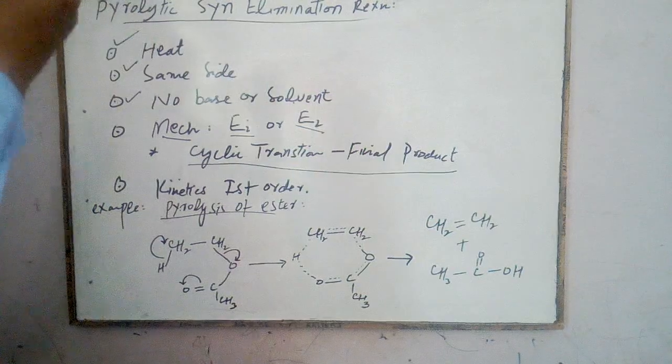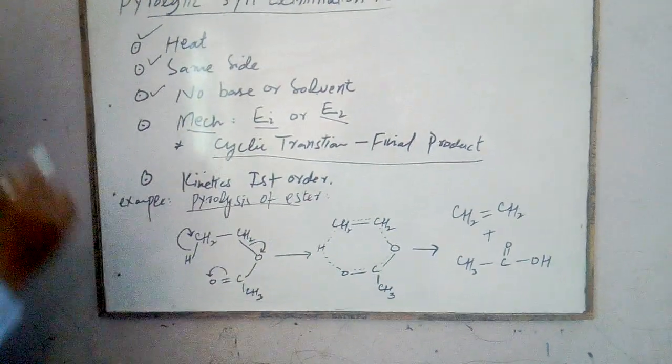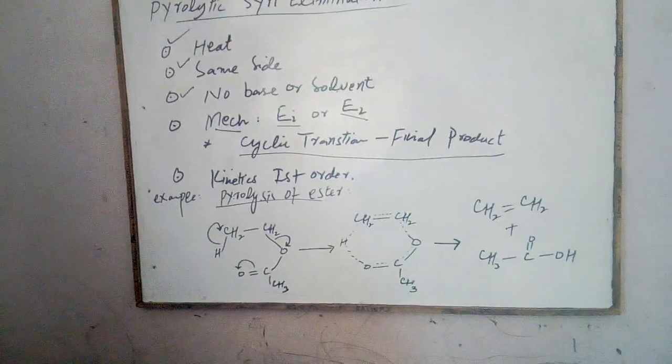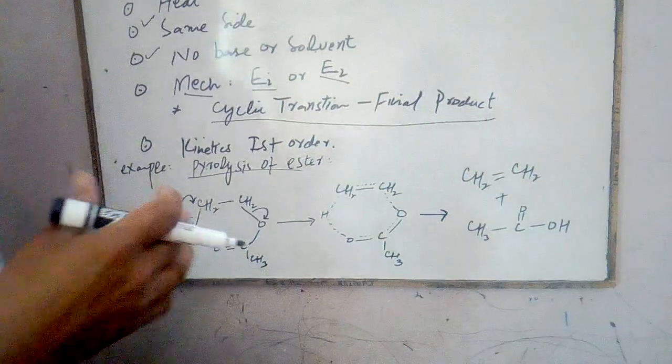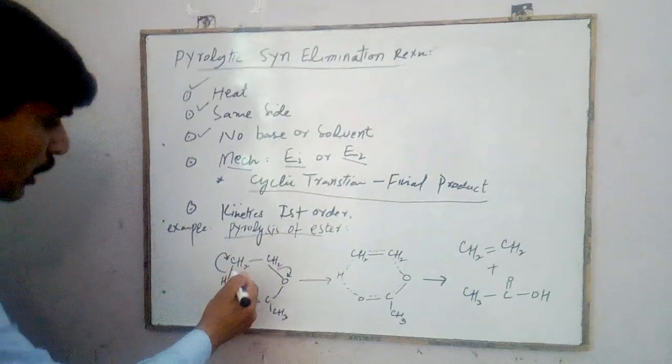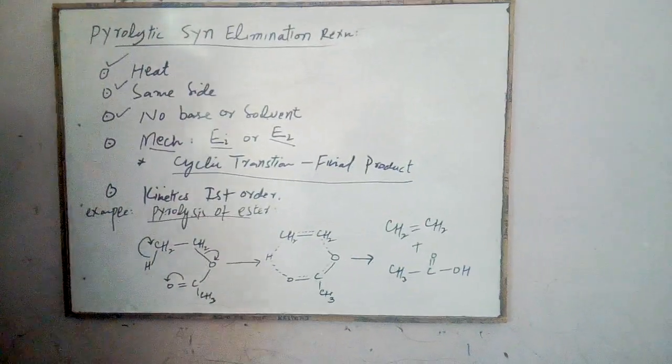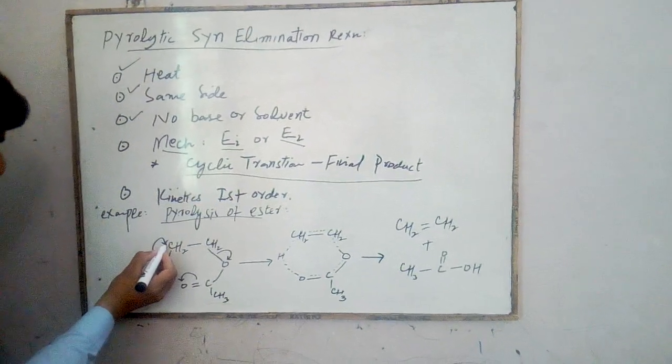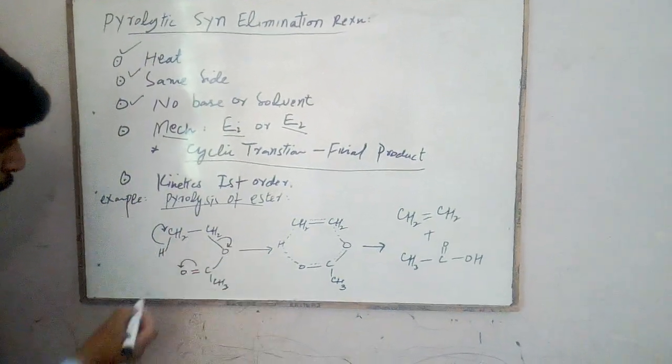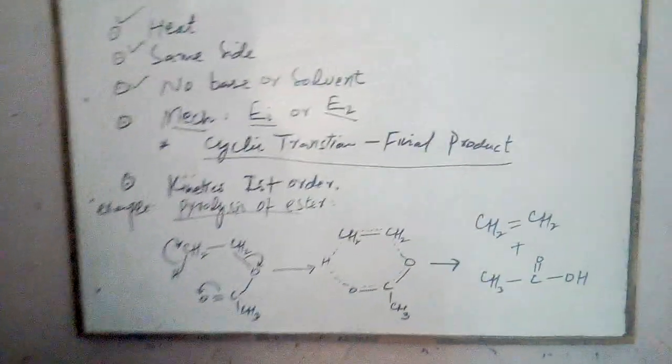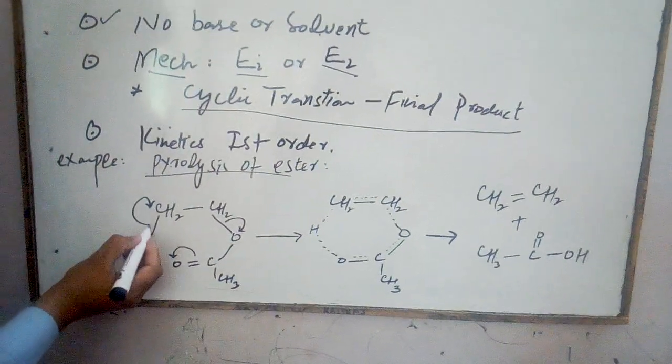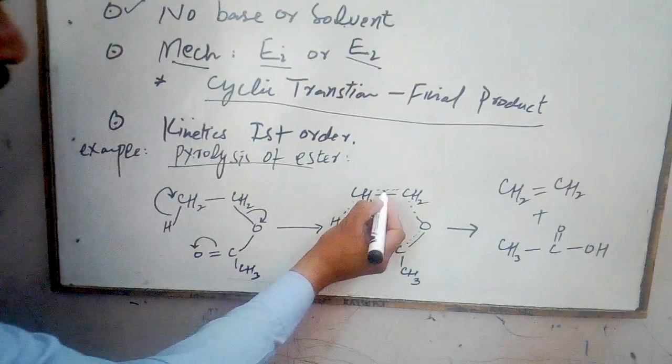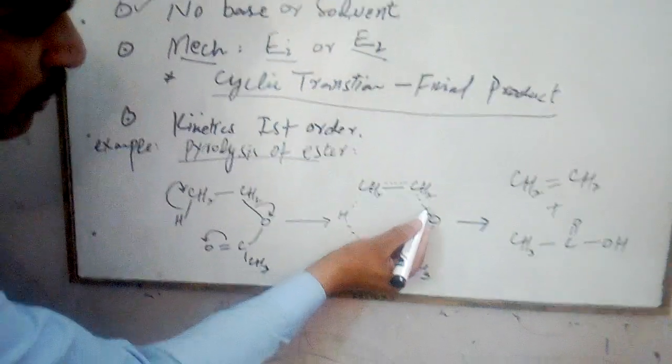Let's discuss a few examples of the pyrolytic syn elimination reactions. The first one is pyrolysis of esters. This is an ester, and this part will be broken down in this direction, and this will be broken down in this direction. After breaking these bonds, a cyclic transition will be obtained.